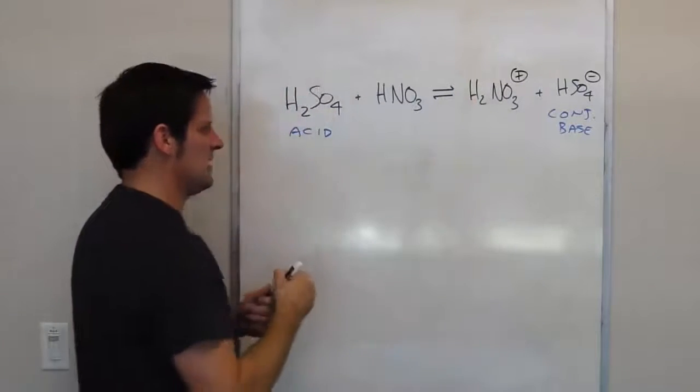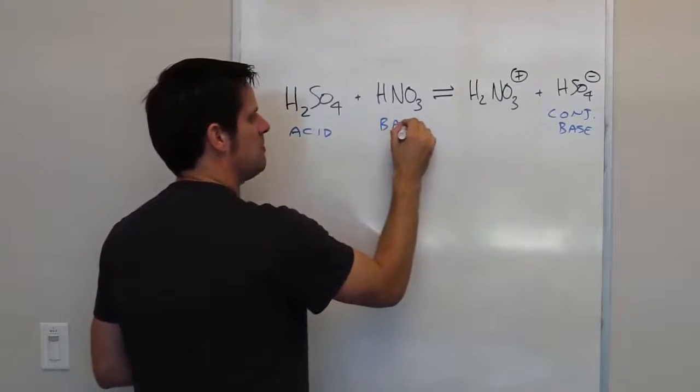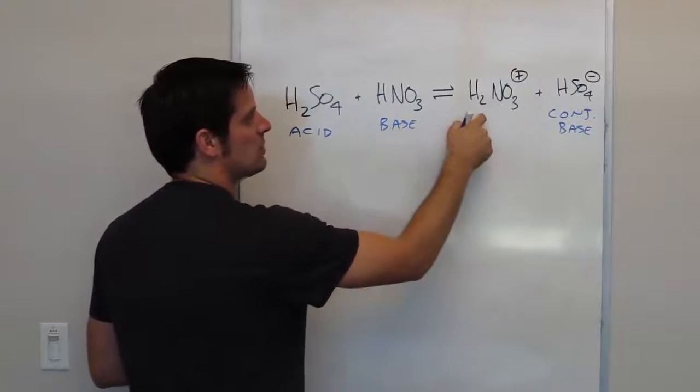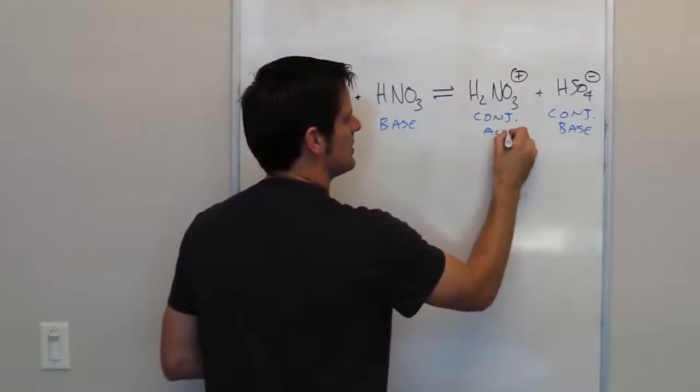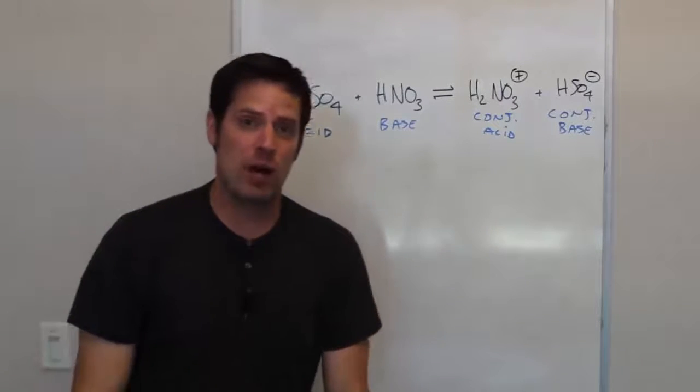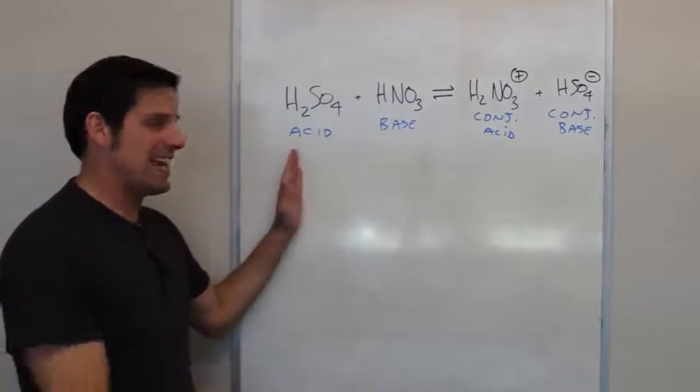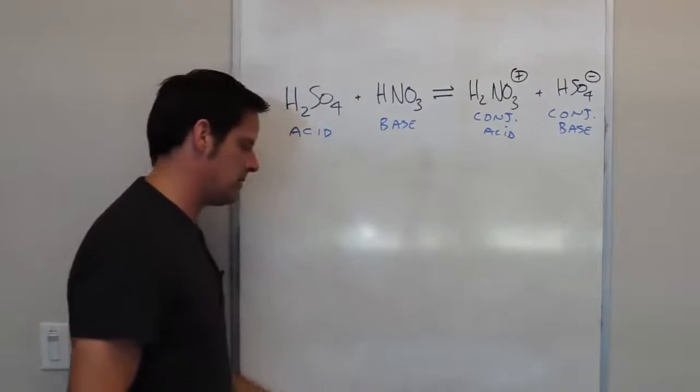So because it received a proton, this molecule right here is behaving as a base, and this molecule right here is its conjugate acid. You can see then that on the left side of any of these acid-base equilibrium equations, there's always something that's an acid, and the other thing has to be the base. And on the right side, there's always a conjugate acid and a conjugate base.